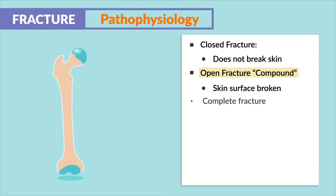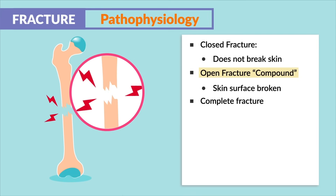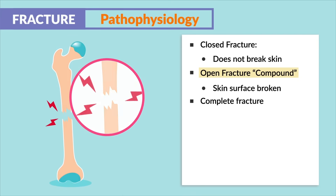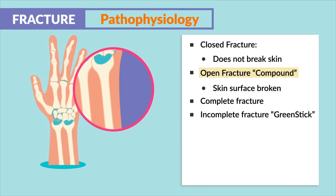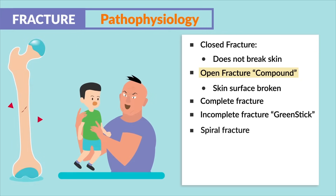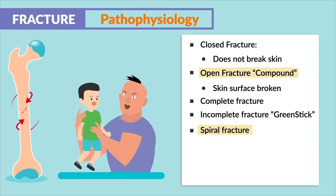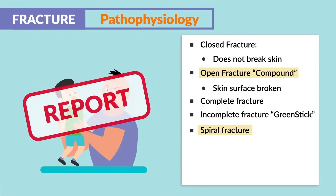We have a complete fracture where the bone is broken all the way through. An incomplete fracture, also called a greenstick, only goes partially through the bone. A spiral fracture — write this one down — results from a twisting motion, so it's common in child abuse. These are typically reported to the authorities for further investigation.